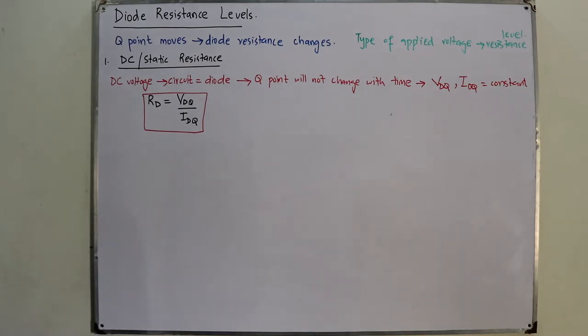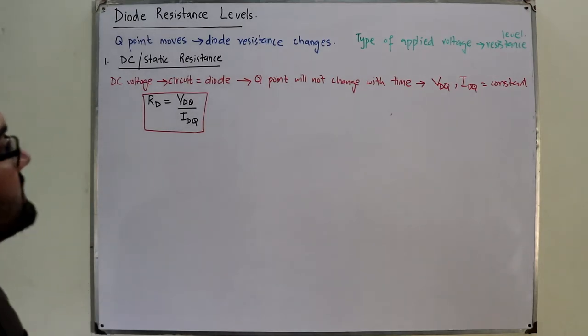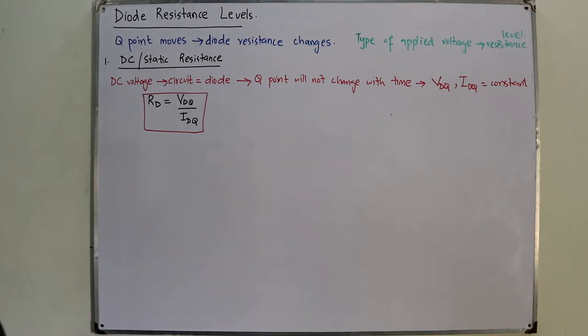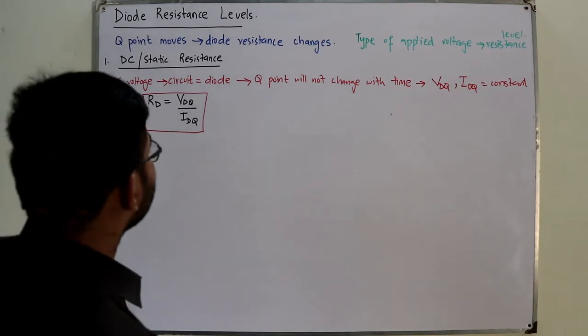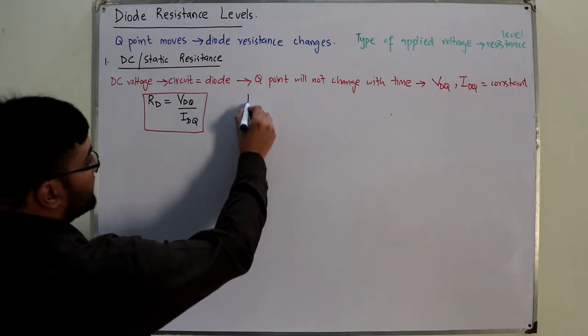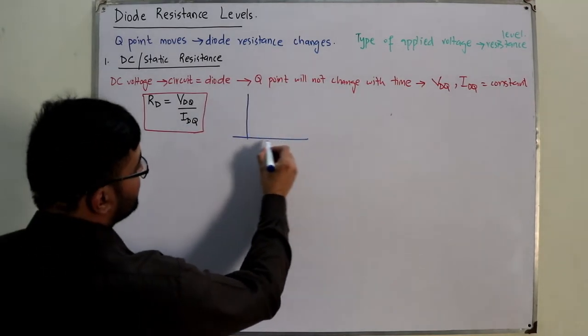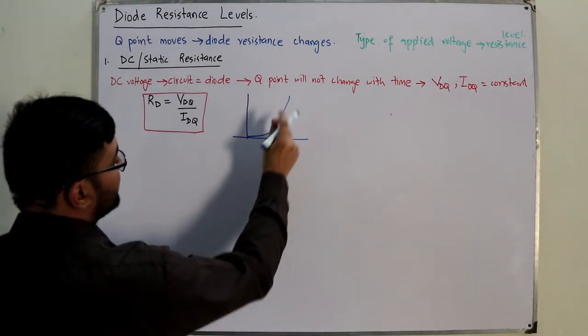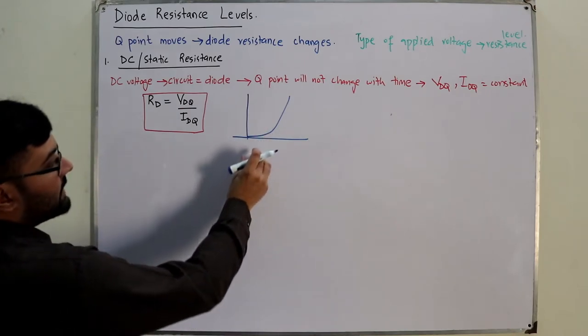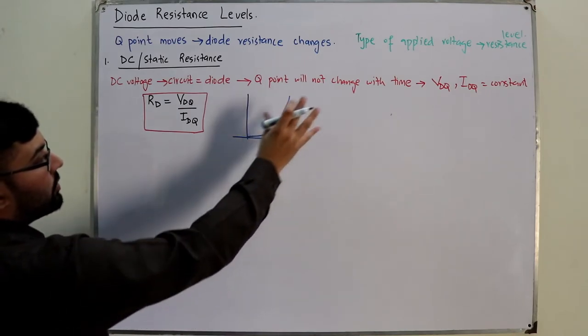Let's say we have an example. The DC resistance at the knee will be greater than the resistance at the vertical rise sections. So if you have the volt-ampere characteristics, you know the knee - the barrier potential represents the knee. So the resistance near the knee would be greater.